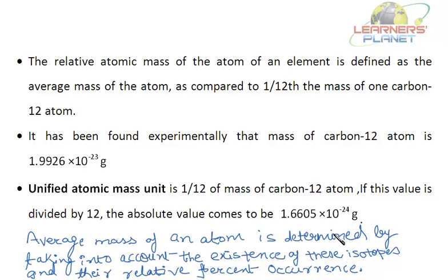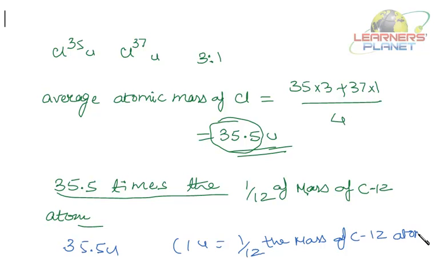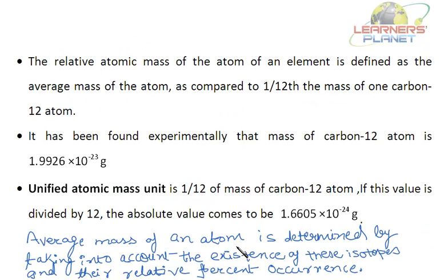So the value of 1 u is 1.660 × 10⁻²⁴ grams. For example, chlorine has an atomic mass of 35.5 u, so its actual mass will be 35.5 × 1.66 × 10⁻²⁴ grams. Students should remember this value: one atomic mass unit equals 1.660 × 10⁻²⁴ grams.